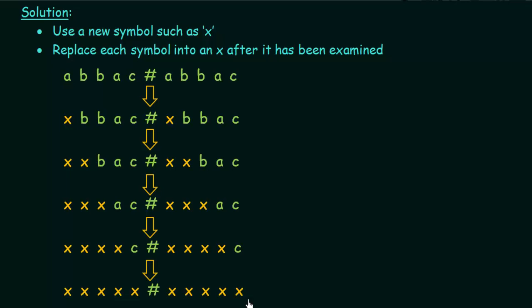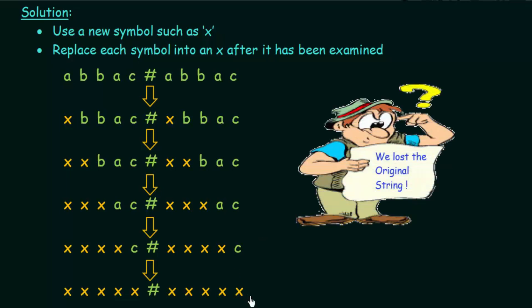However, there is a problem with this approach. We have served our purpose — we found that the first half and second half of the string are the same — but we have a problem. The disadvantage of this method is that we have lost the original string. At the end, we only have a string containing x's; the original string is gone.